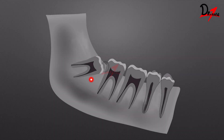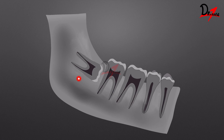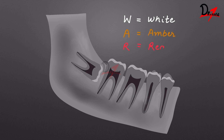The third molar impaction can be in any direction. It can be mesoangular, it can be distoangular, it can be vertical, or it can even be horizontal. To know the position and the depth of the impacted third molar, George Winter described the WAR lines. These are basically three imaginary lines that we draw on a radiograph with different colors: W stands for white, A stands for amber, and R stands for red.